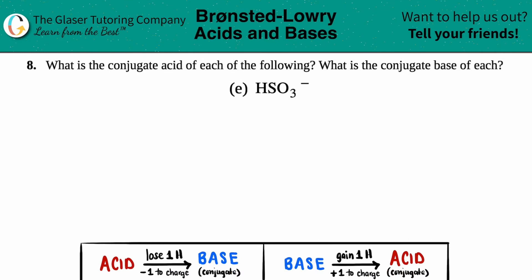Number eight. What is the conjugate acid of each of the following, and what's the conjugate base of each? Then we have letter E. So in this case, we have to find the conjugate acid and the conjugate base of HSO3 minus.